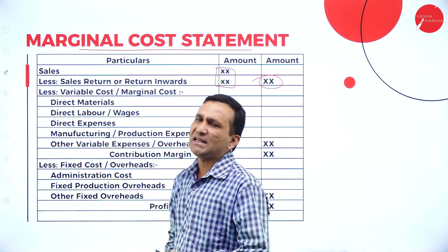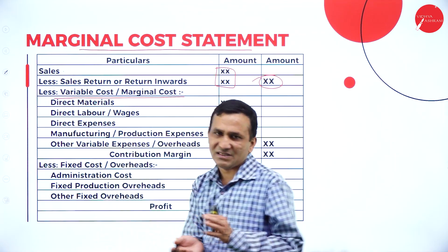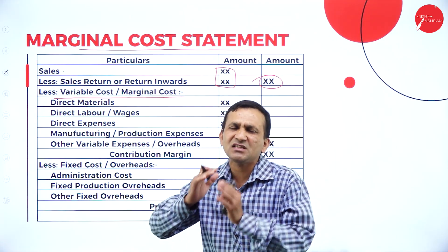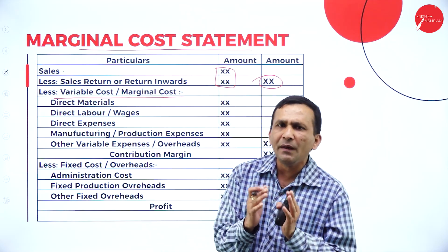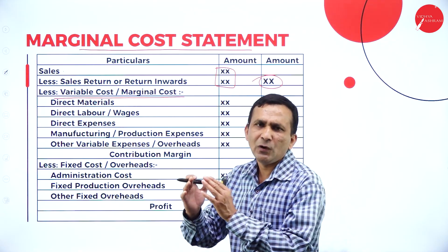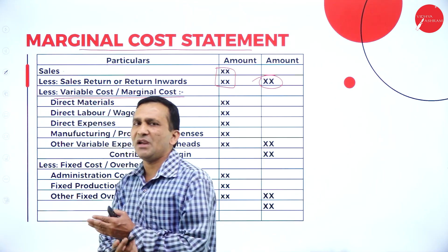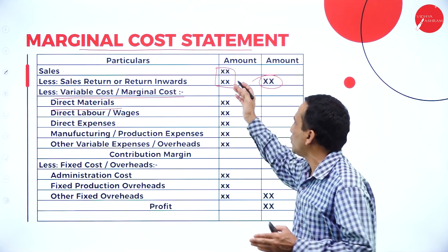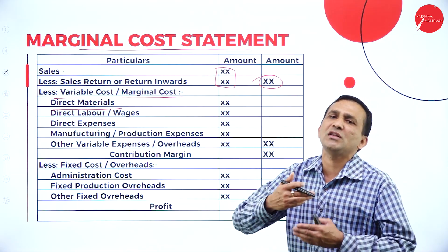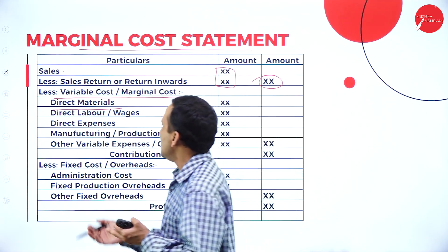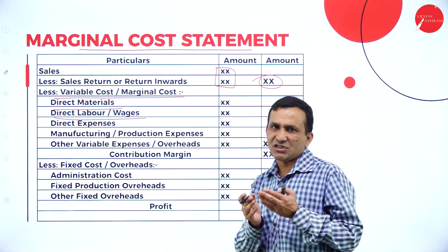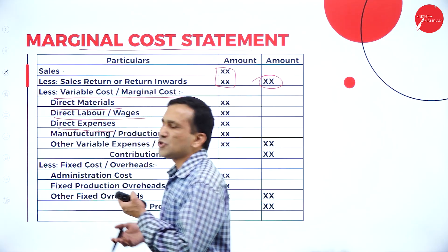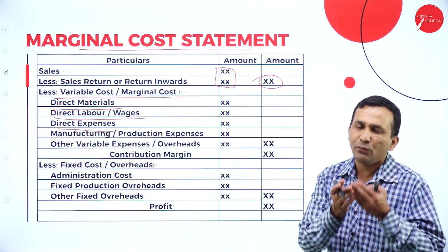After specifying the sales, we need to subtract the variable cost or marginal cost. Variable cost, as the name suggests, keeps on varying — it includes material, labor, and other variable expenses. Direct materials, which vary, are written in the inner column when there are multiple items. Direct labor or wages given in the question go in the inner column, and direct expenses which are also variable are written under the variable items.